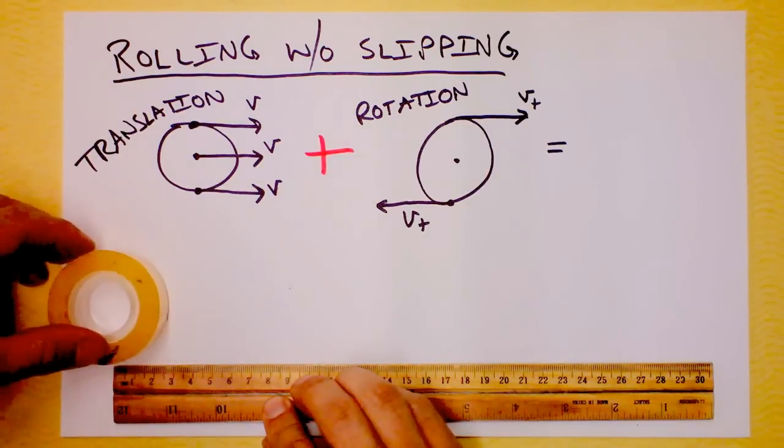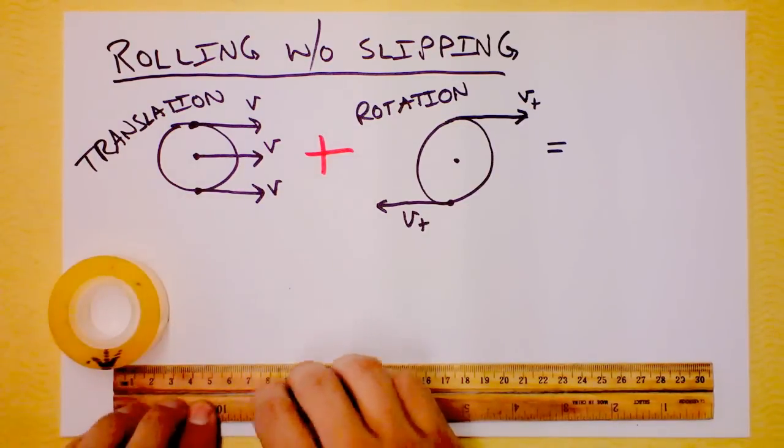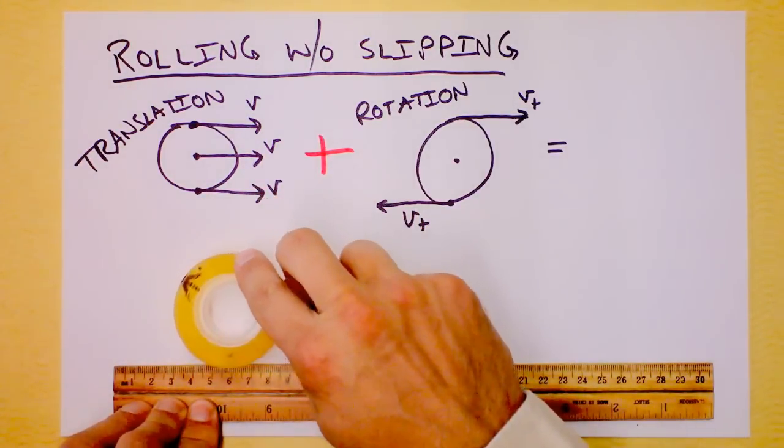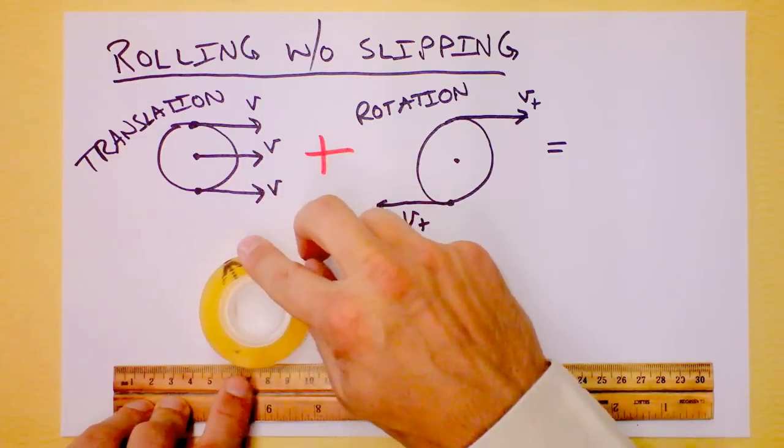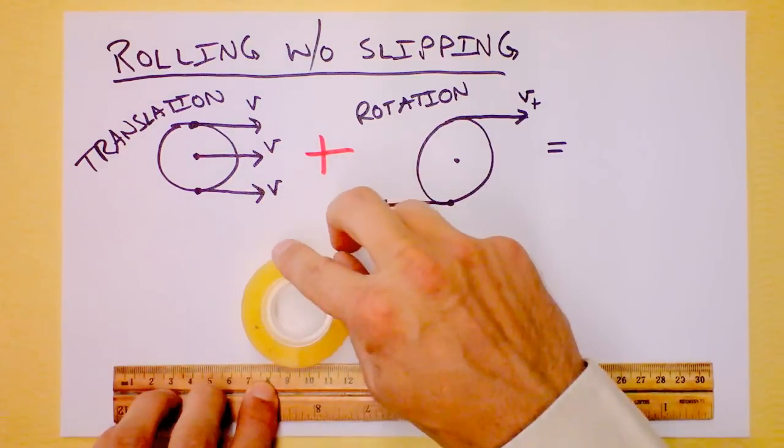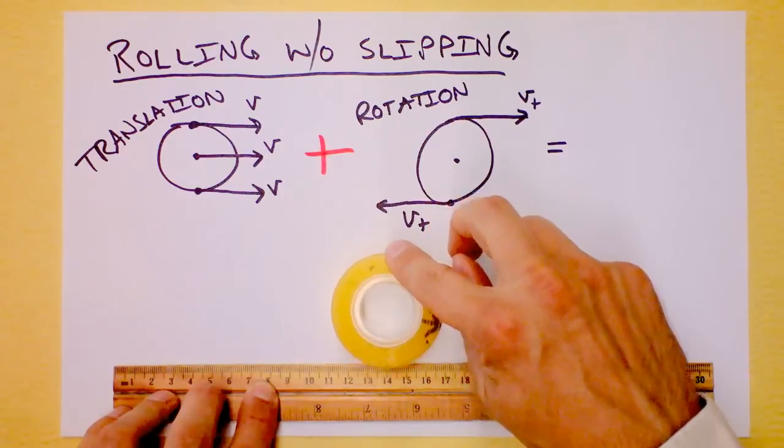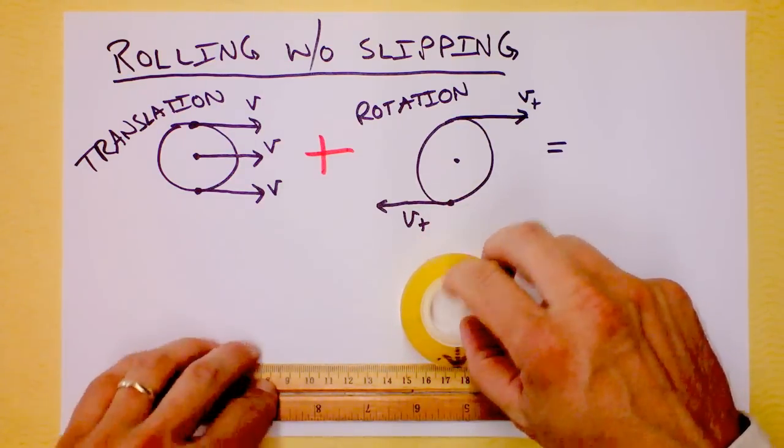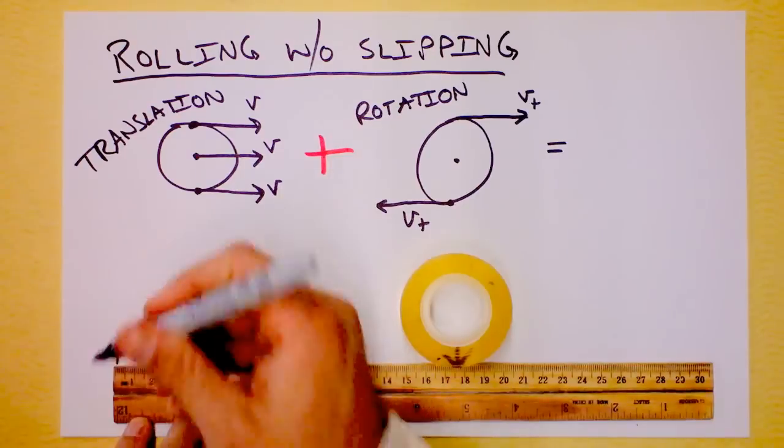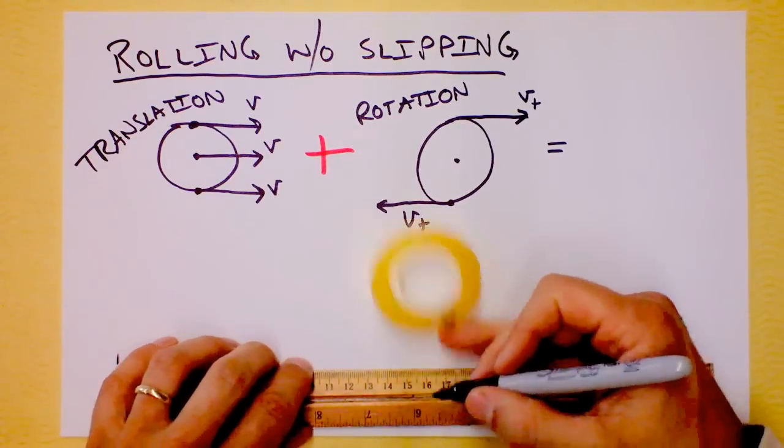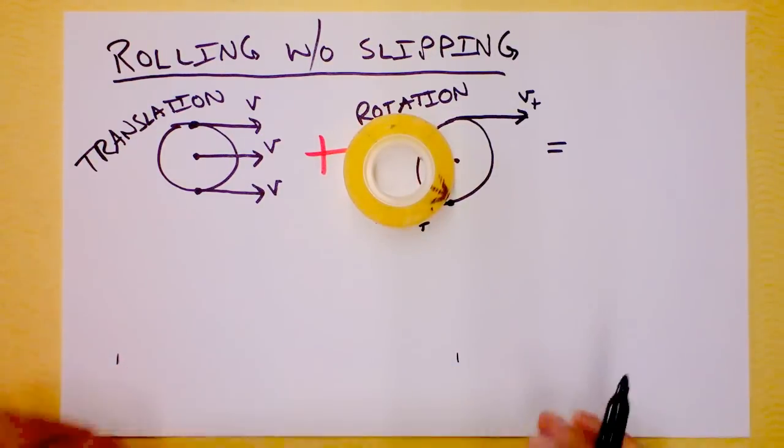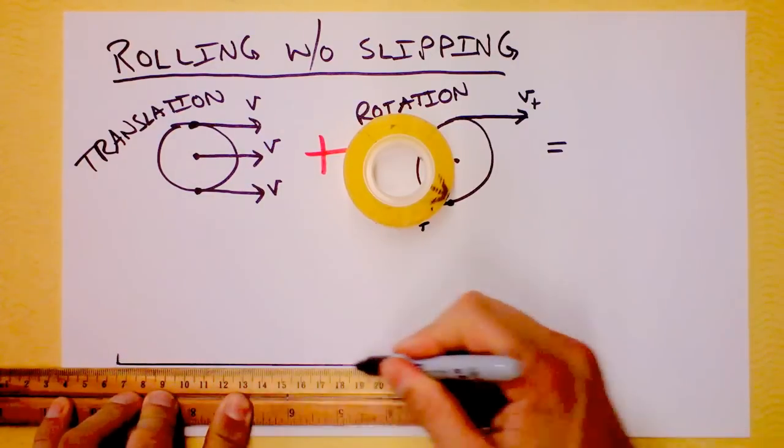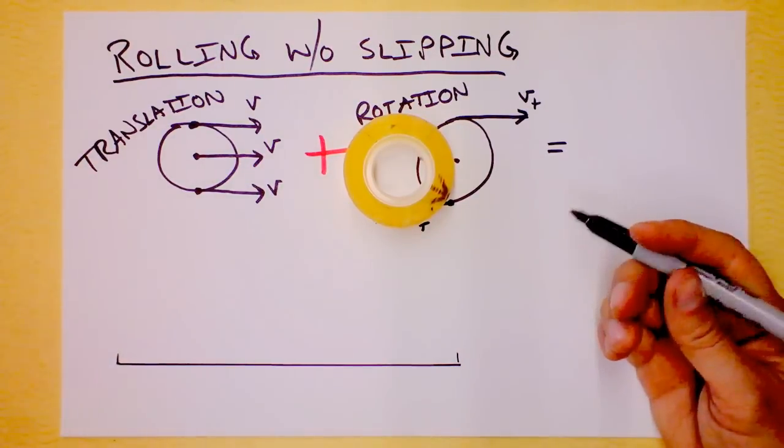Here I have the roll of tape, and I'm going to start it at zero, and I would like to roll it without slipping. Notice that the bottom is stuck to the ruler. I'm going to translate it all the way around. Can you tell me, if I draw a little tick mark here and a little tick mark right there, can you tell me how far the wheel has gone? Well, it rolled all the way around, right?